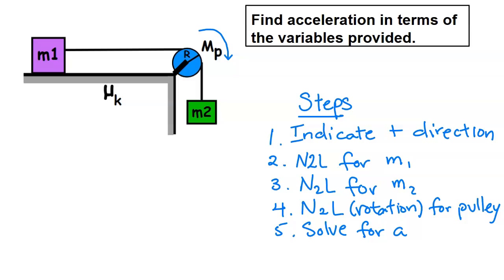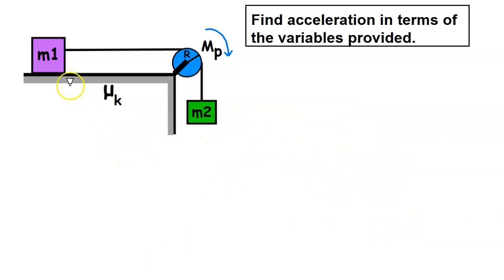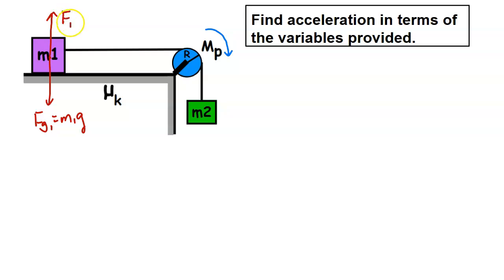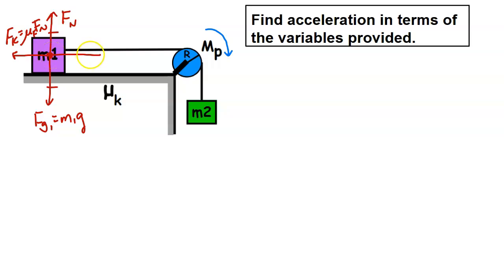To help write Newton's second law I'll draw the forces acting on each object. For m1 we have gravitational force fg1 = m1g pointing down, normal force fn pointing up — these are equal and opposite since m1 doesn't accelerate vertically. There is also kinetic friction to the left, fk = μk × fn. On the string there is also a tension force t1 pulling to the right.